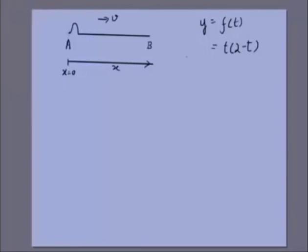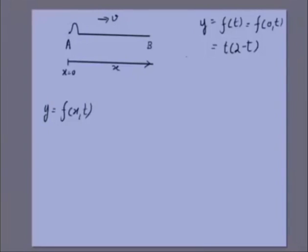We want to write an equation y = f(x, t) giving the displacement of any point x at any time t. We know y as a function of time at x = 0, and we know the wave travels at speed v. From these two pieces of information we want to determine y at any position x and any time t.